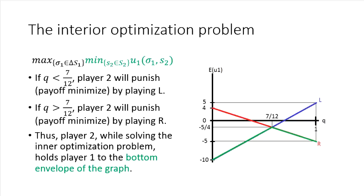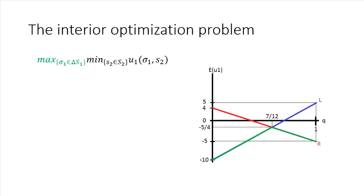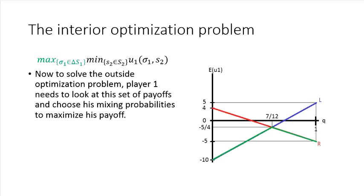which means all that's left from player one's perspective is to choose his strategy Q that would maximize his utility given how player two is already solving the inside optimization problem. So now that we move to the outside of the optimization problem, I think life is pretty easy now, hopefully.